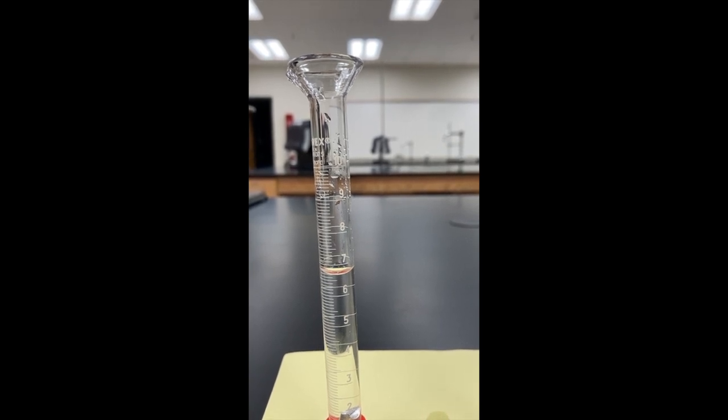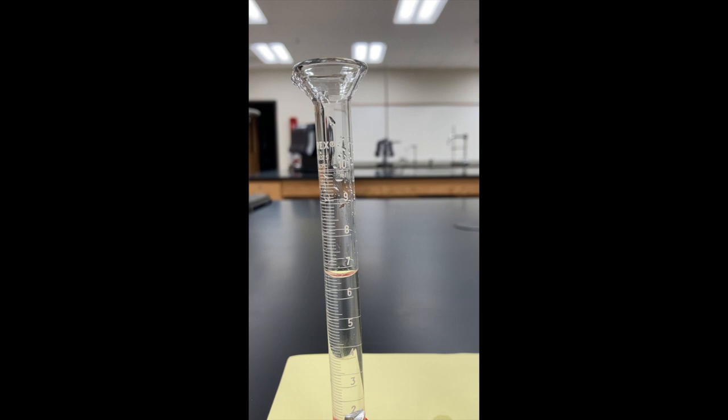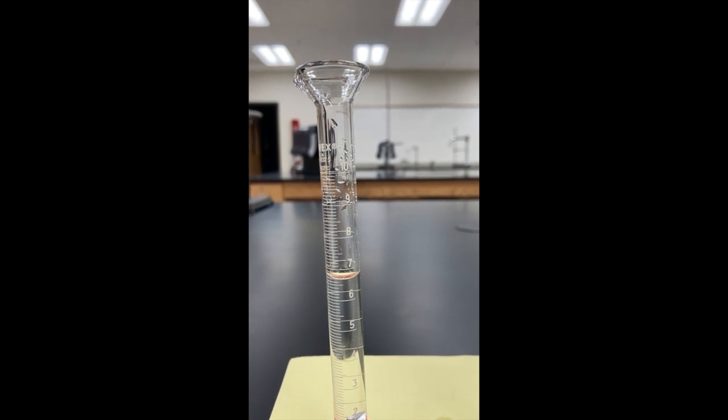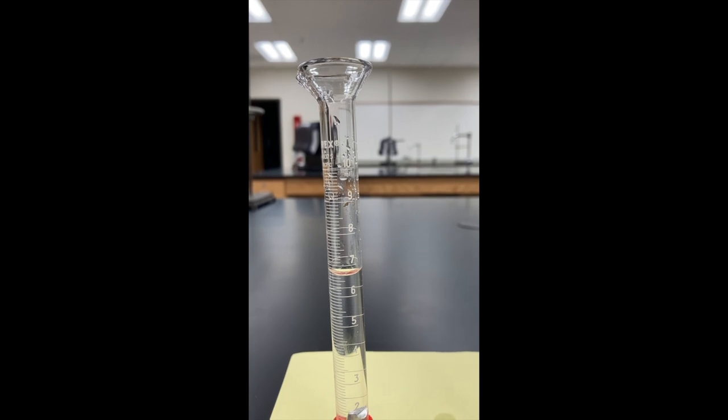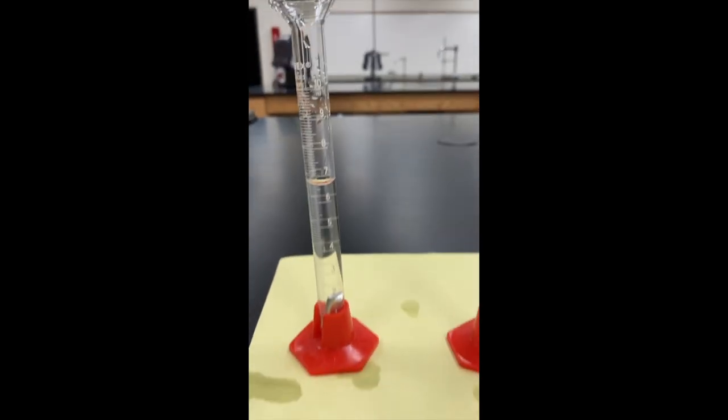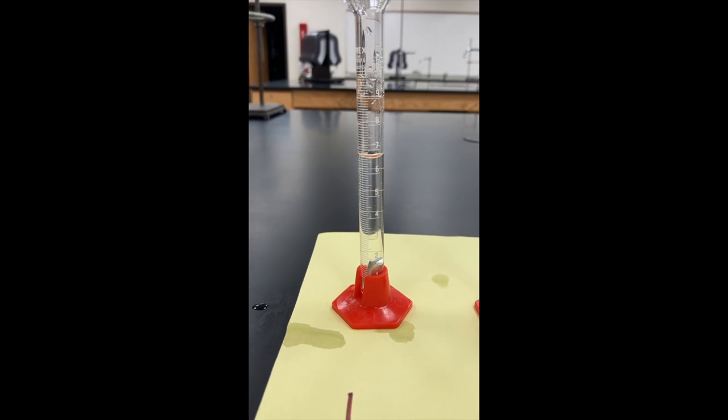Let's let that focus in again. Yep, about 6.7 milliliters, because you always read from the bottom of that water curve - the bottom of the curve is called a meniscus, and you always read from the bottom. So record 6.7 as your beginning volume for piece number one.